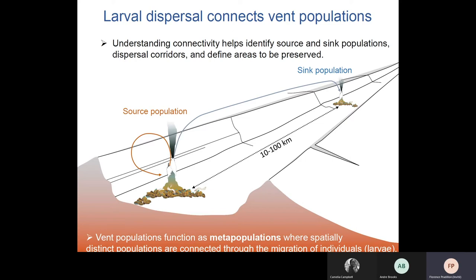Understanding connectivity between populations may help identify populations that produce many larvae and are capable of reaching other sites — these are called source populations. They are important for the long-term persistence of the species as they contribute to the supply of colonists. Sink populations, on the contrary, are not producing many larvae or their larvae are constrained in dispersal. Identifying such populations gives a better idea of the main dispersal corridors and the connectivity network structure, and ultimately helps identify areas that should be preserved in priority in a conservation perspective.